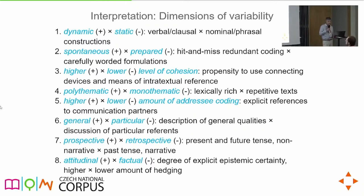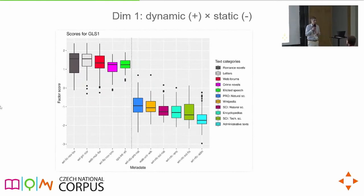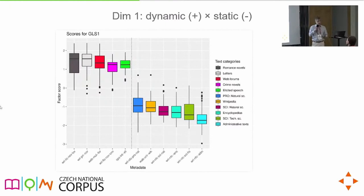The eighth dimension is attitudinal versus factual — the degree of explicit epistemic certainty. Looking at the first dimension, the most dynamic texts are romance novels, very verb-heavy with many clauses. Then there are letters, private letters, web forums, crime novels, and elicited speech — mostly narration and spoken conversation. On the other hand, the most static texts are administrative texts, scientific texts from technical sciences, encyclopedias, texts from natural sciences, and Wikipedia articles.